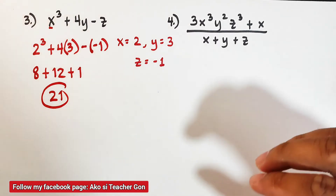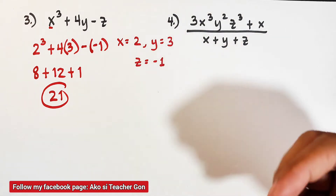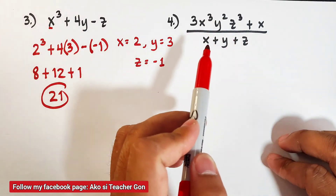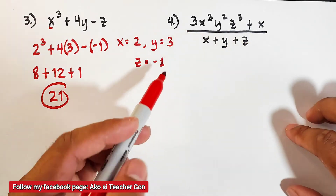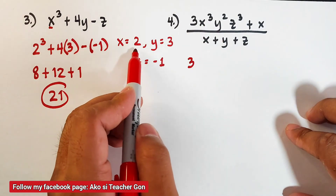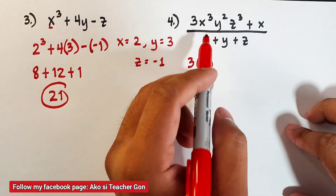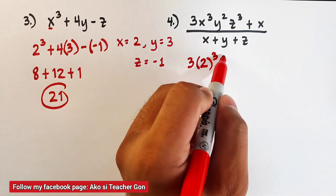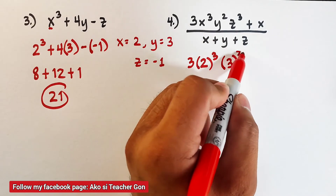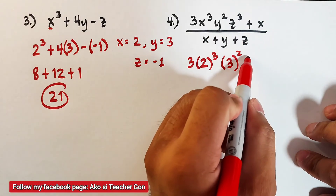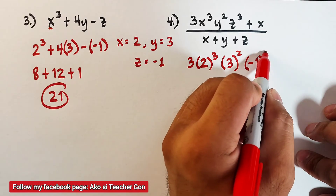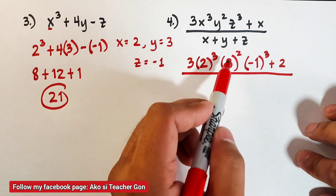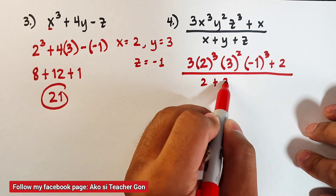The last number looks difficult, but trust me — we have 3x cubed y squared z cubed, plus x over (x plus y plus z). Let's start: we have 3 times 2 cubed times 3 squared times negative 1 cubed, plus 2 over (2 plus 3 plus negative 1).